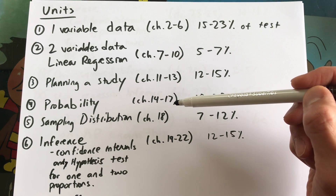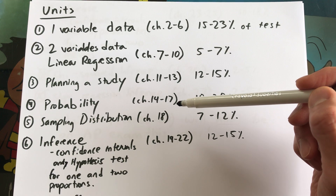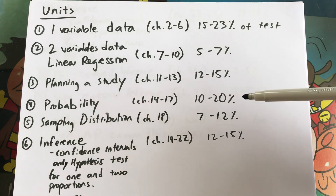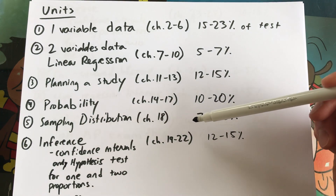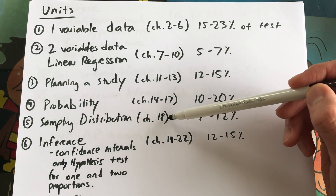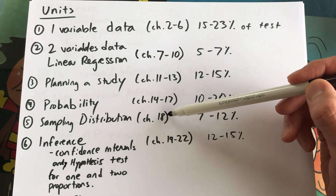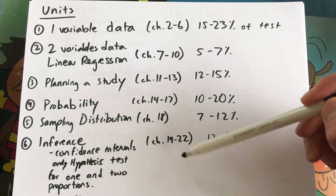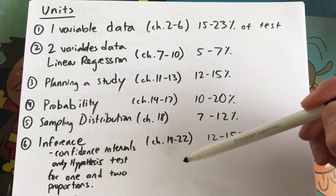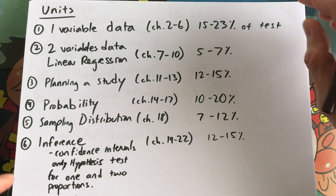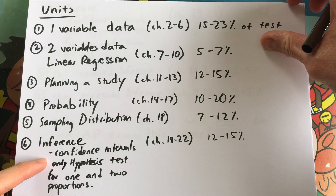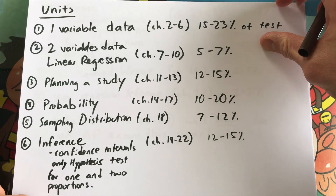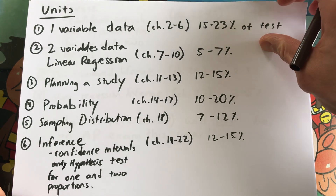Unit 4 is probability — what we started in January — covering conditional probability, binomial, geometric, and Venn diagrams. That's 10 to 20% of your test. Unit 5, sampling distributions, is a small part — really just one chapter, chapter 18. Unit 6 is inference, which is the bulk of your test. We've already covered one and two proportions, confidence intervals, hypothesis tests, and the two types of errors.